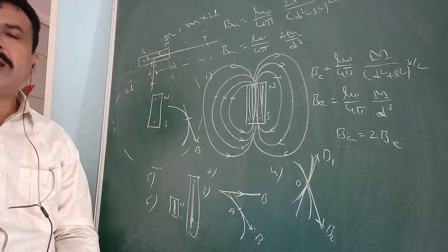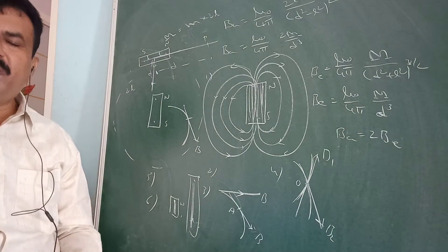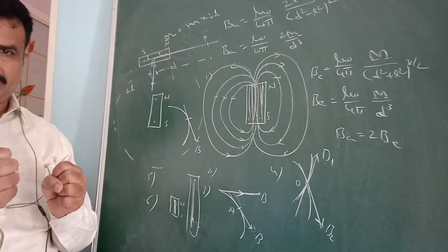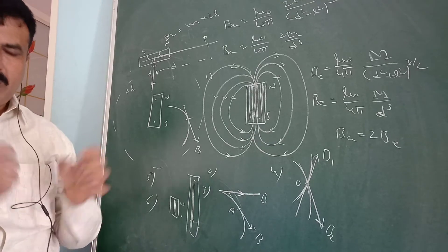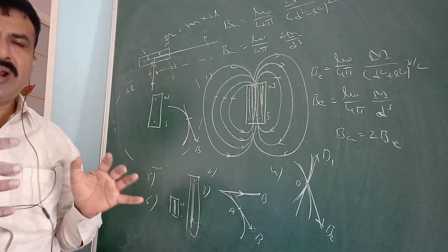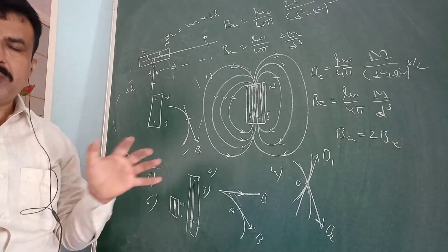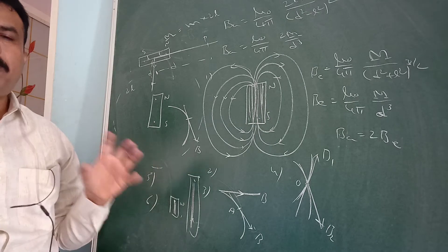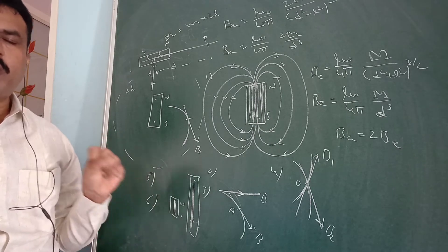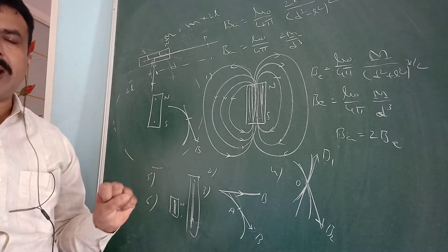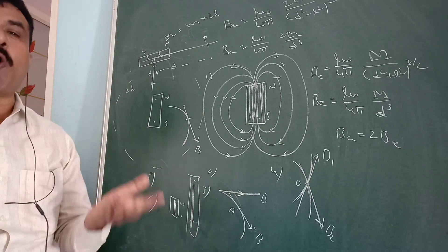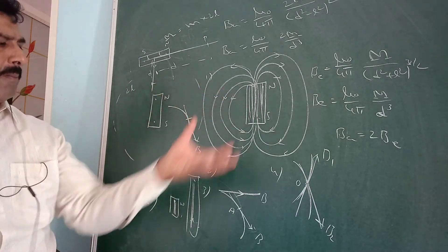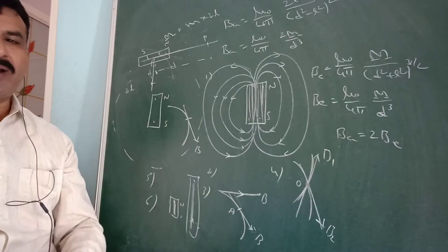The sixth property: magnetic field lines contract lengthwise, which gives rise to the force of attraction between unlike poles. These are the properties of magnetism.